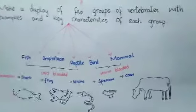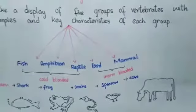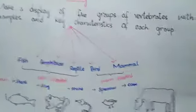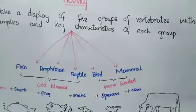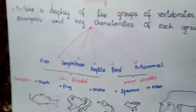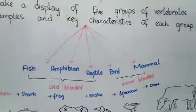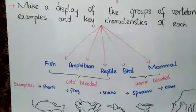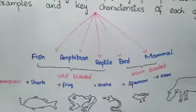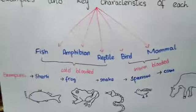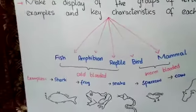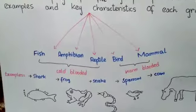The next key characteristic is their habitat — where they live. You can build your display using flash cards or sticky papers. Write the group name on one sticky paper, then the example on another, and join them with staples or glue. This gives you a nice display of the five groups of vertebrates.